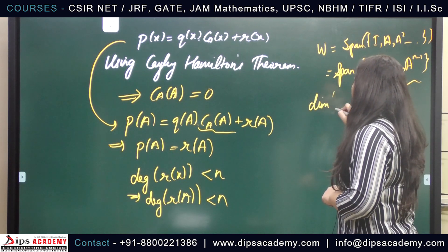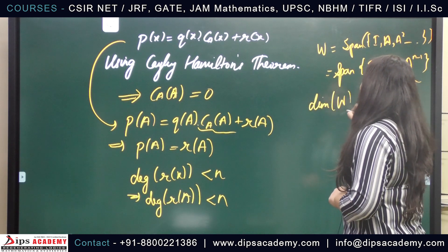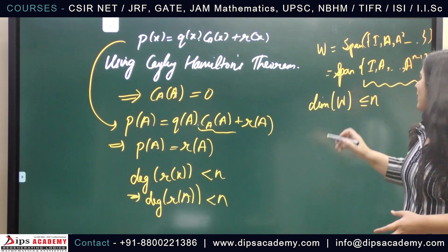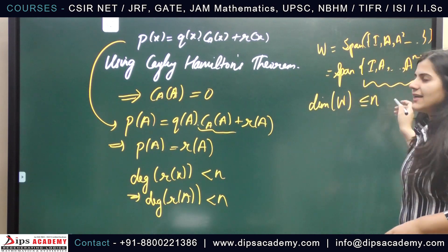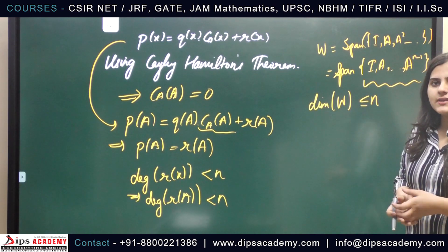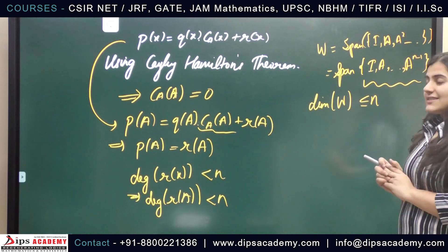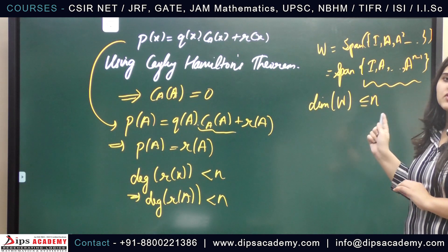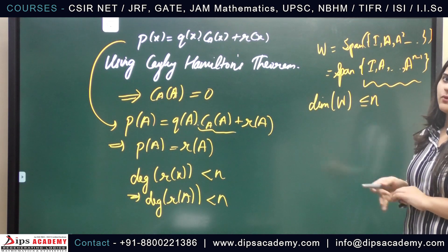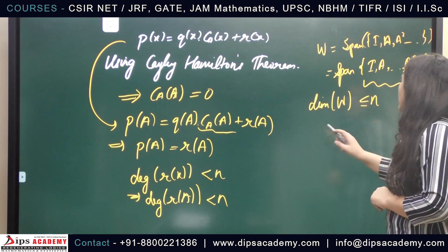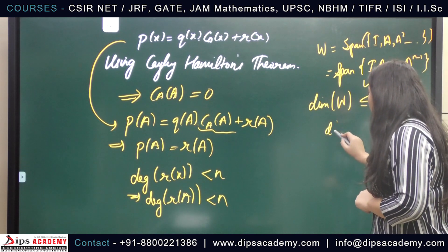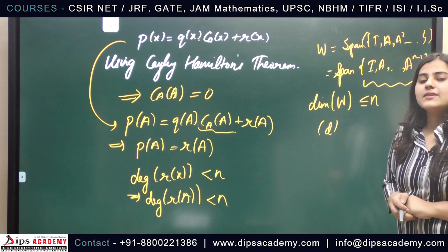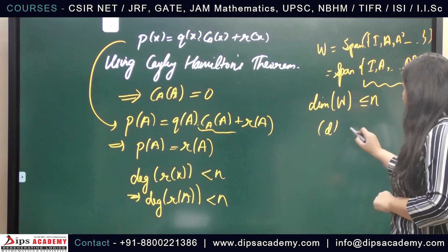Therefore, the dimension of W must be less than or equal to n. We don't yet know whether this set is linearly independent, but the cardinality of this spanning set is n, so any basis must contain at most n elements. Therefore, option D — which states that the dimension of W is at most n — is correct.